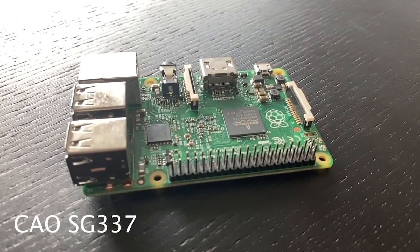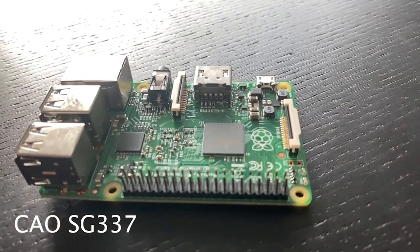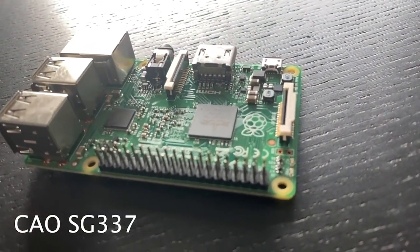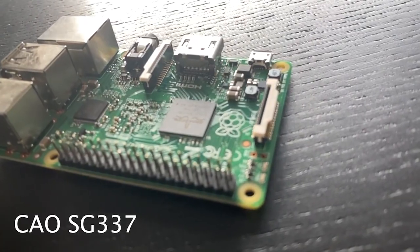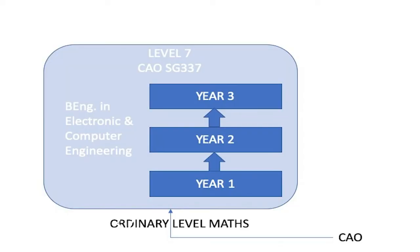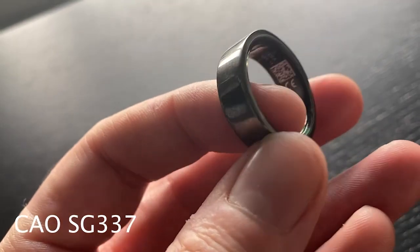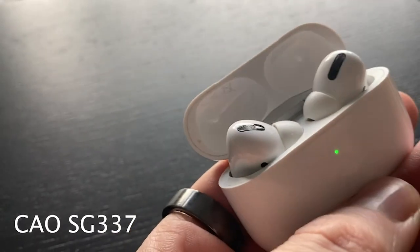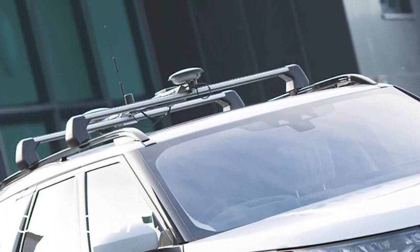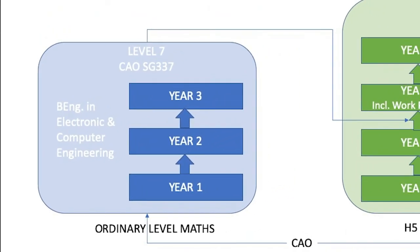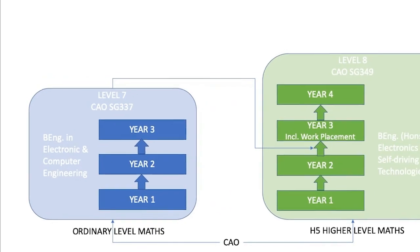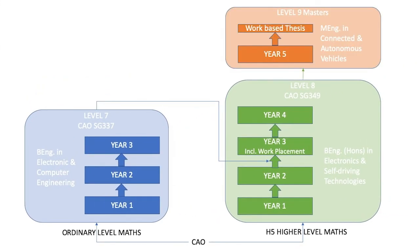If you're interested in technology or engineering but are not doing higher level maths, why not consider our Level 7 in Electronic and Computer Engineering? This is a three-year program looking at the design and development of embedded electronic systems — the medical devices that keep us healthy, the consumer devices that keep us entertained, or the controlled systems that keep us safe on the road. You can progress onto the Level 8 in Electronics and Self-Driving Technologies and from there to the Masters. Check out the link below for more information.